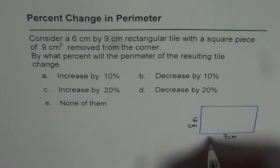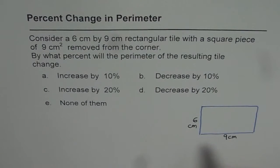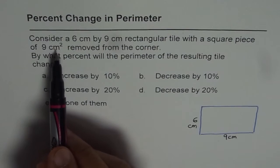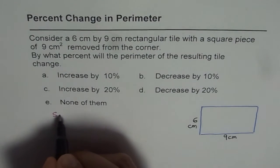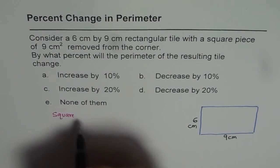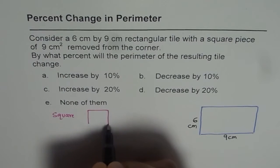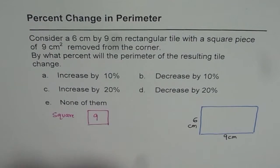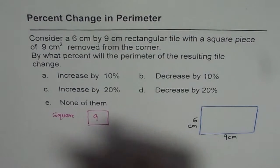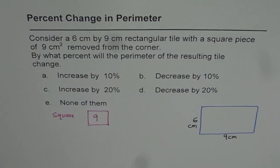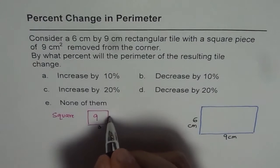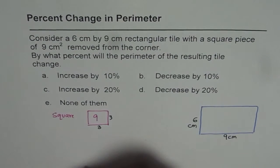Now from this, we are removing a square piece which is 9 cm square. So we say square whose area is 9 cm square. That means the side should be how much? Well, this side should be 3 times 3, right? So each side should be 3. That gives us 9 as the area.